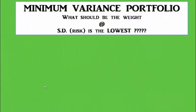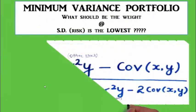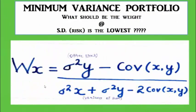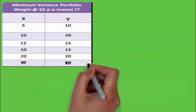The formula for calculating that weight is simple. The weight of X equals: (variance of Y minus covariance of X and Y) divided by (variance of X plus variance of Y minus 2 × covariance). Let's see how this formula works with an example.